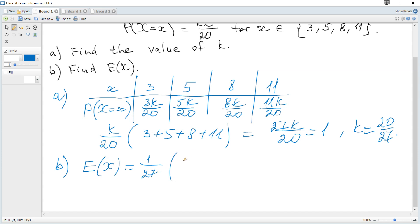And it becomes 3 multiplied by 3 plus 5 multiplied by 5 plus 8 multiplied by 8 plus 11 multiplied by 11.